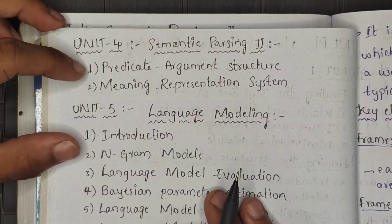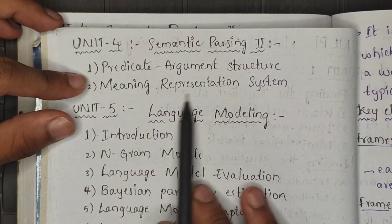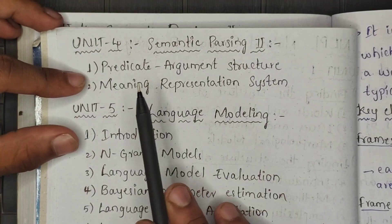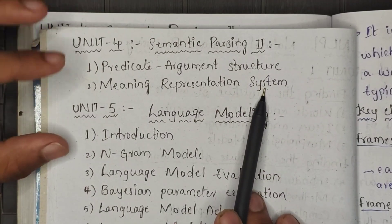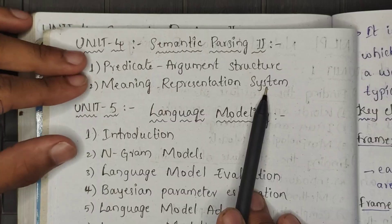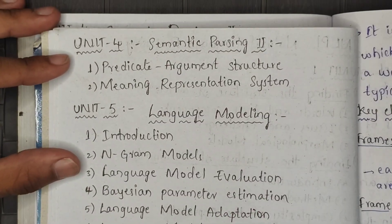In this topic, we have two questions. We have Predicate Argument Structure and Meaning Representation System. These two topics are explained in this video. This is a very important topic.